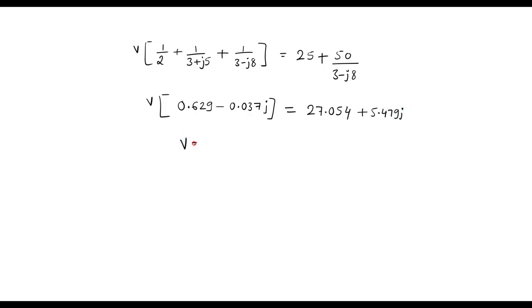So let me write. V is equal to 27.054 plus 5.479J divided by 0.629 minus 0.037J.